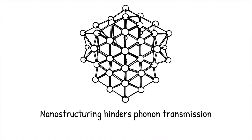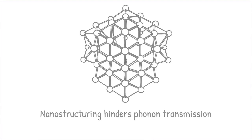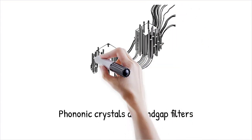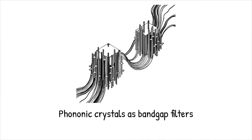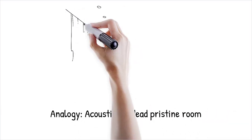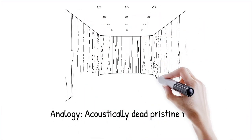Phononic crystals—periodic nanostructures designed to block specific phonon frequencies—act like bandgap filters, preventing certain heat waves from propagating. It's like designing a room that looks pristine, but is acoustically dead. Perfect form, but no echo, no transmission.